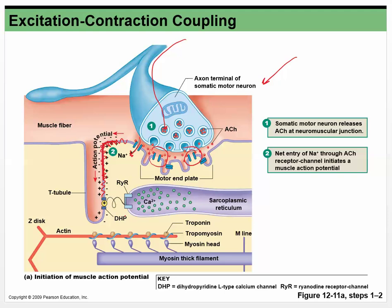Moving down the T-tubule, we're not too worried about the specific relationship between the DHP receptor and the ryanodine receptor. The DHP receptor is a voltage sensor — it says 'hey, we've just depolarized, something has caused this muscle cell to depolarize' — either from being shocked or more usually from acetylcholine being released. It moves down there and the voltage sensor tells the ryanodine receptor to open.